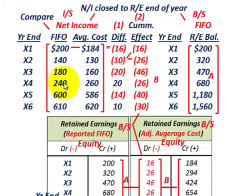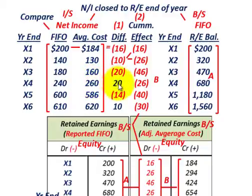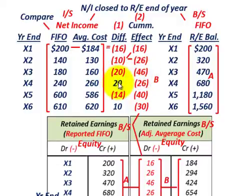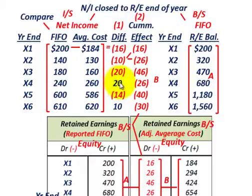For year X4, FIFO was $240,000, but average cost net income increases to $260,000 — a positive difference of $20,000. So the cumulative effect, which was negative $46,000 at the end of year X3, is now reduced down to $26,000 at the end of year X4, simply $46,000 less the $20,000 increase.